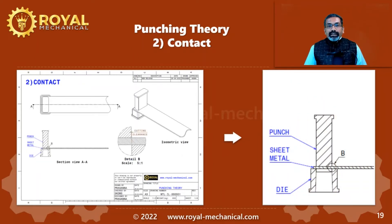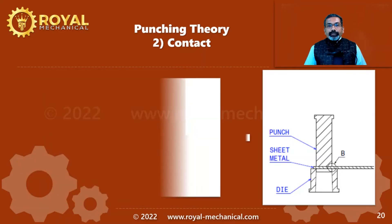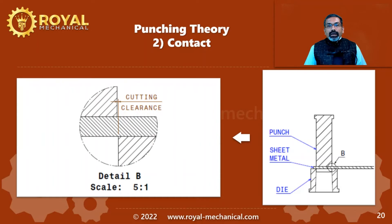The next stage is the contact. Let's take a closer look at detail view B. When the press slide comes down, the punch touches the raw material. When the punch touches the raw material, the raw material experiences a huge impact load.